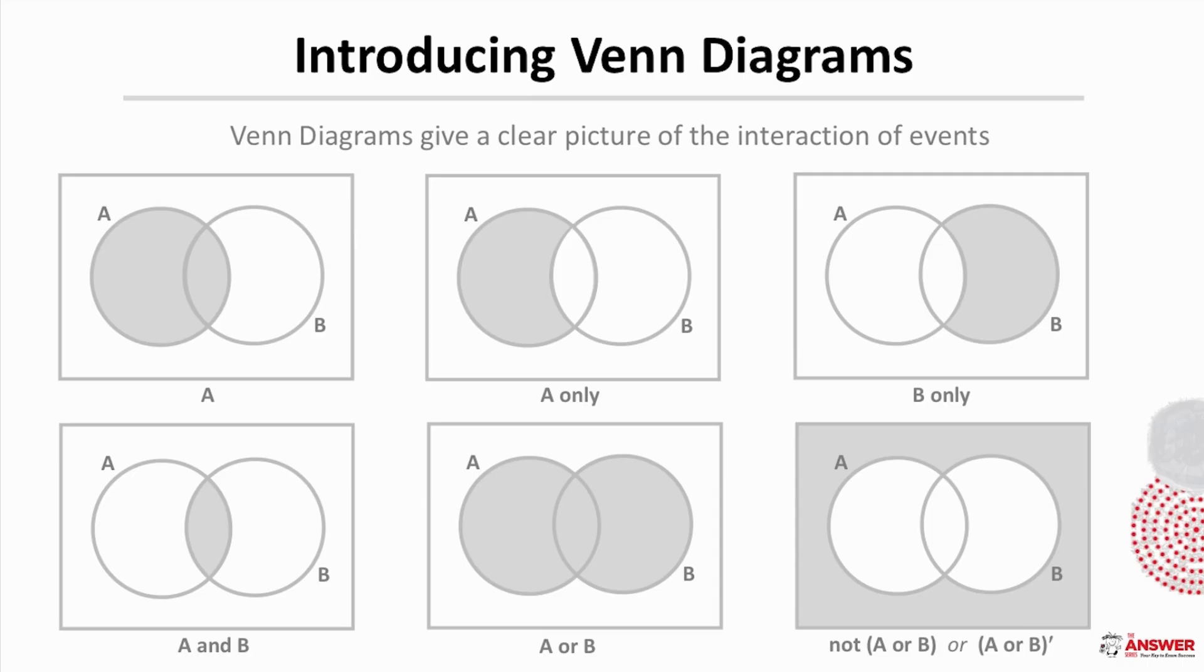The first looks at the whole of A, then here what has been selected is in A only and not in B or the rest of the sample space. Here it is then B only and not A or the rest of the sample space.